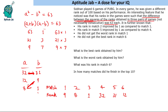The best rank obtained by him is 1. The worst rank obtained is 32. His rank in match 6 was 12. In how many matches did he finish in the top 10? He finished in the top 10 in 3 matches. This is the complete solution to the set.